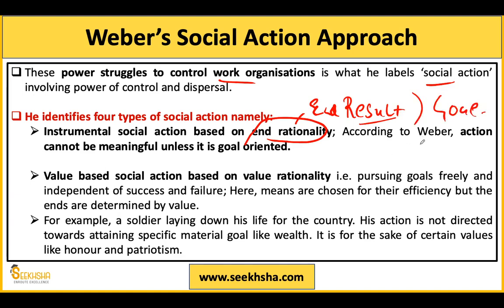The second type is value-based social action. In this, the goals you pursue and the path to pursue them are value-based. Your goals and your ends are both value-based. Success and failure do not matter here — what matters is that your end is value-based, and with that value you will not compromise.